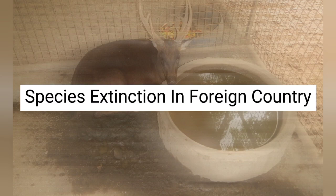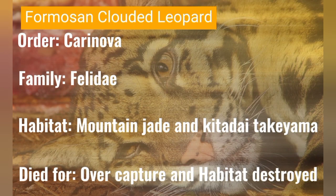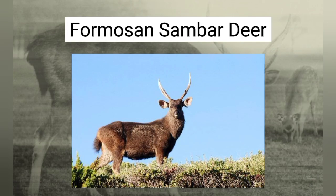Species Extension in Foreign Countries. Formosan Clouded Leopard — order: Carnivora, family: Felidae.